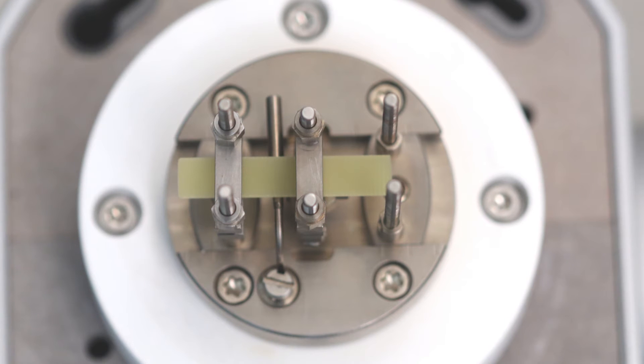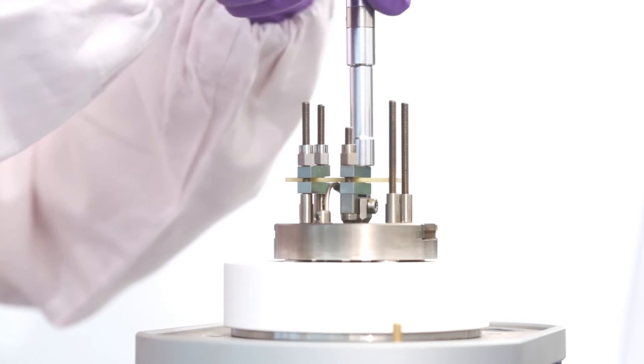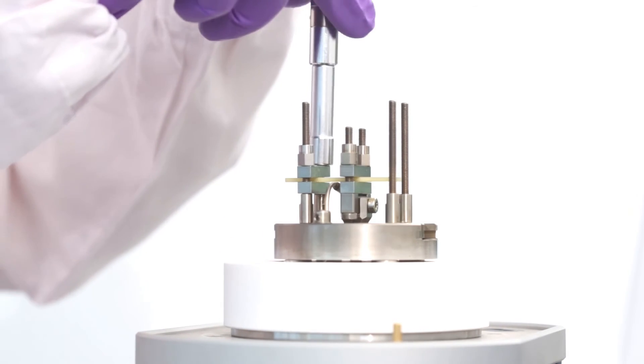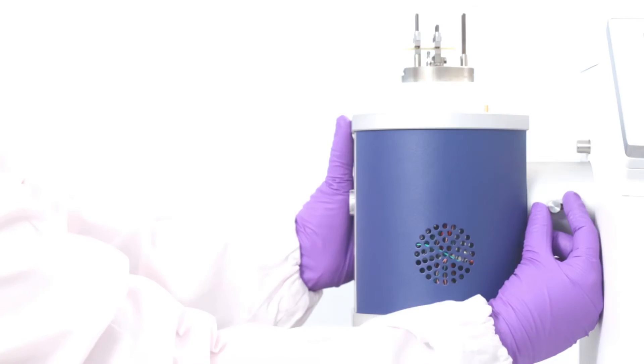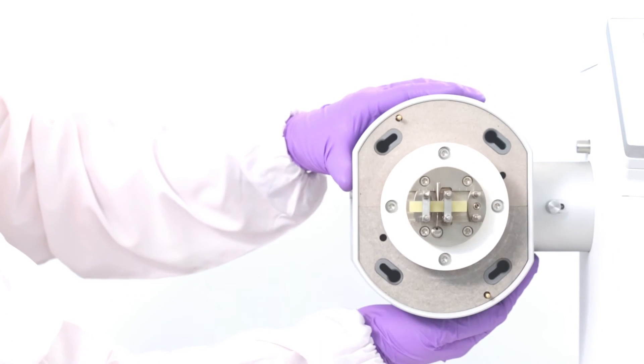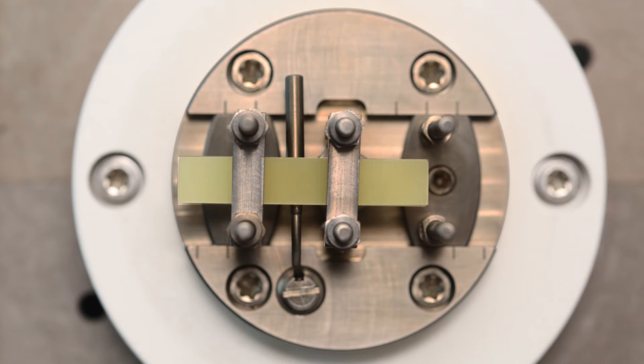After checking that the sample has not moved, we can proceed to tighten the outer two nuts and the middle two nuts evenly with a torque wrench. The measuring head must be rotated to the horizontal position. The sample is now ready for a measurement in single cantilever mode.